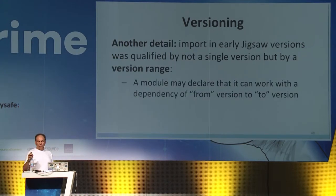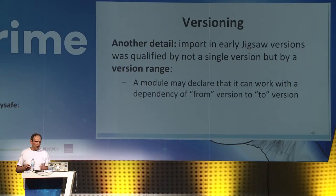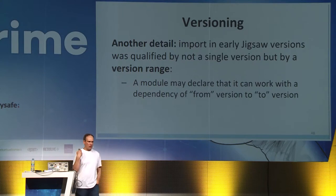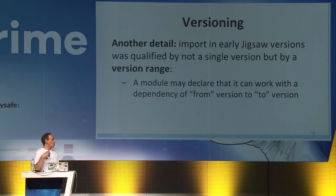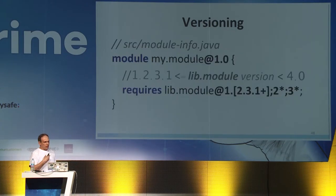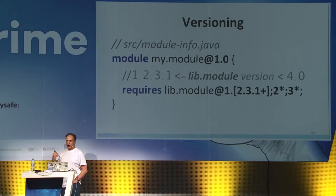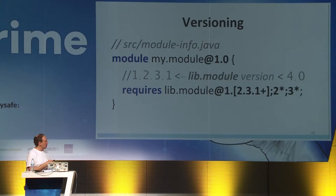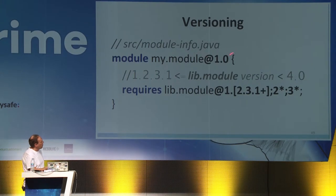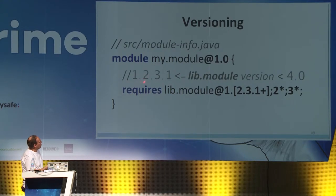There is one more detail. Import in early Jigsaw versions was qualified not by a single version but by a version range, so a module could declare that it can work with a dependency from one version to another version. I found how versions could be described in early Jigsaw drafts: a module 'my.module' of version 1.0 could import 'lib.module' from version [1.2.3, 1.2.4).